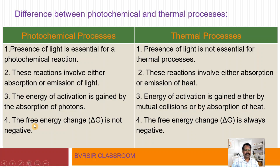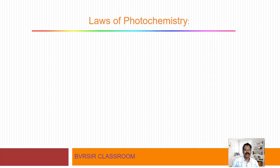Another point: the free energy change. We represent it as delta G — the Gibbs free energy change — and it is not necessarily negative in photochemical processes. However, the free energy change delta G value is always negative in thermal processes. This helps differentiate photochemical processes from thermal processes.